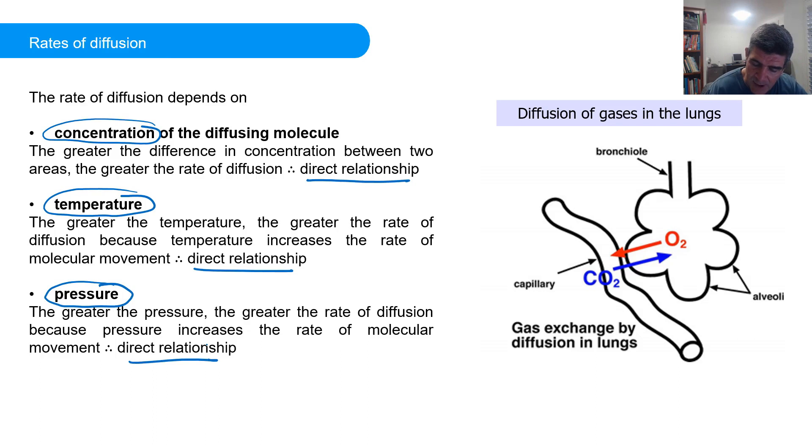It's easy to remember the effect that each of these has because they're all direct relationships. And direct relationships mean that if we increase the temperature, then we increase the rate of diffusion. And that occurs for concentration of the diffusing particles as well as it does for the pressure of the diffusing gases.